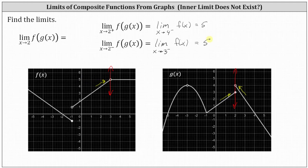Because both one-sided limits of the composite function are equal to five, the original limit of the composite function is also equal to five, even though the limit of the inner function doesn't exist. I hope you found this helpful.